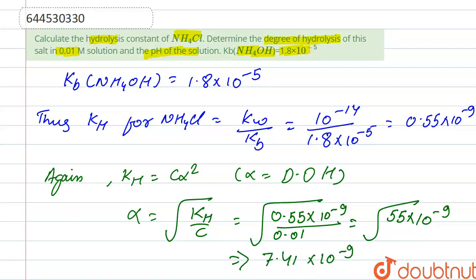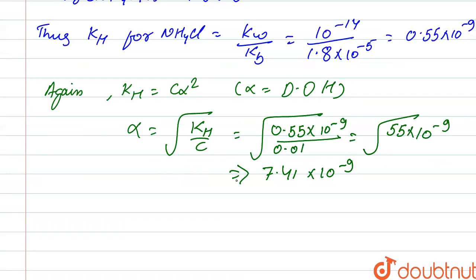So this is the value of alpha. And we know that the pH can be calculated by the help of formula: that is half of pKw minus half of log C minus half of pKb.